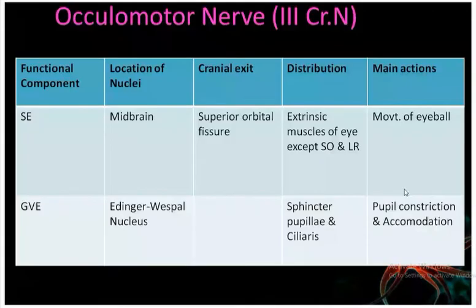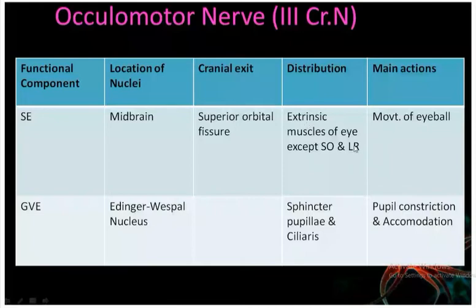Summary of the oculomotor nerve: functional components are somatic efferent and general visceral efferent. Motor nucleus is the Edinger-Westphal nucleus. It exits the cranium through the superior orbital fissure, supplying extraocular muscles except superior oblique and lateral rectus. Main actions include pupil constriction, accommodation, and elevation of the upper eyelid.